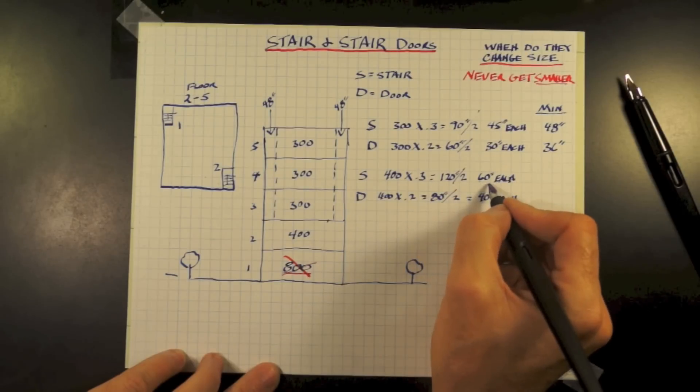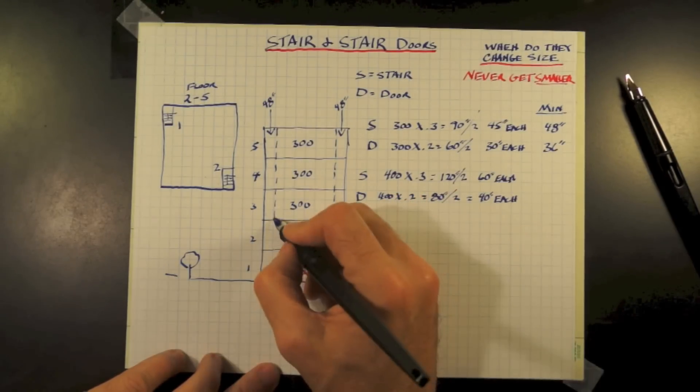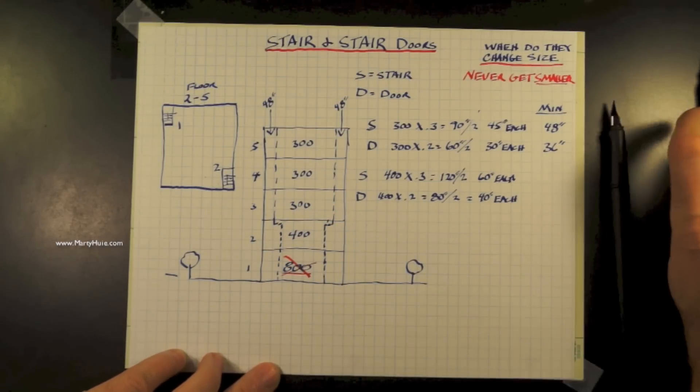And remember, this is the clear width, not the panel size of the door. So graphically, we're going to show the stair increasing in size to 60 inches.